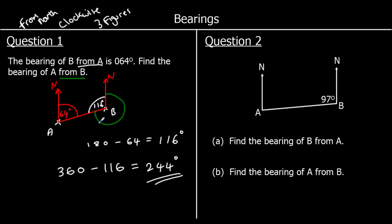Question two. We've got a diagram drawn and we're given a 97-degree angle — that's not a bearing; it's not measured clockwise from north and it's not given in three figures; it's just information to help us answer the question. Part A is asking for the bearing of B from A — so from A, clockwise from north. We can use co-interior angles: co-interior angles add up to 180 degrees. So 180 take away 97 is 83. We write a zero in front of the 83, so the bearing is 083.